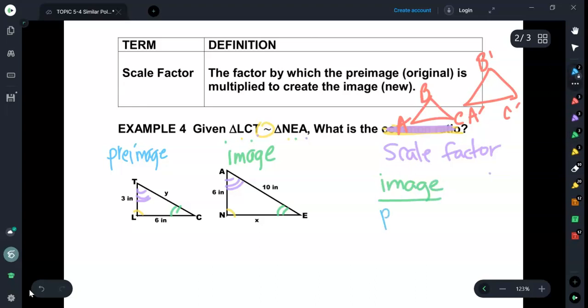Here's how you do the scale factor. The scale factor is found by taking the image and dividing it by the pre-image. Now that is a ratio of sorts, but we're going to look at it as a single value. So let's look at our picture.